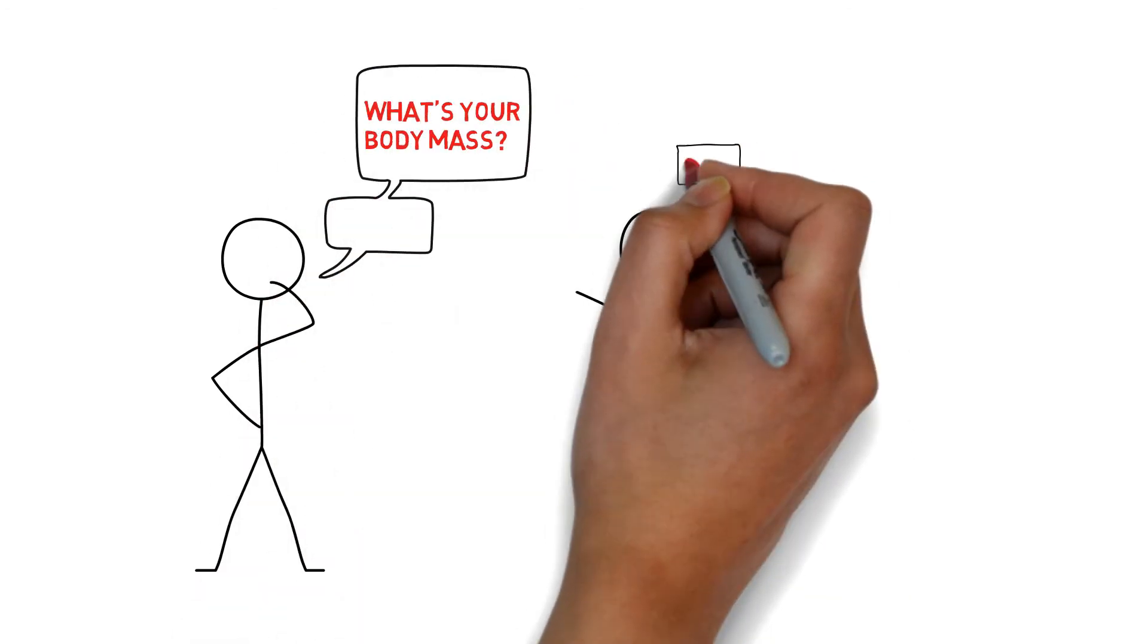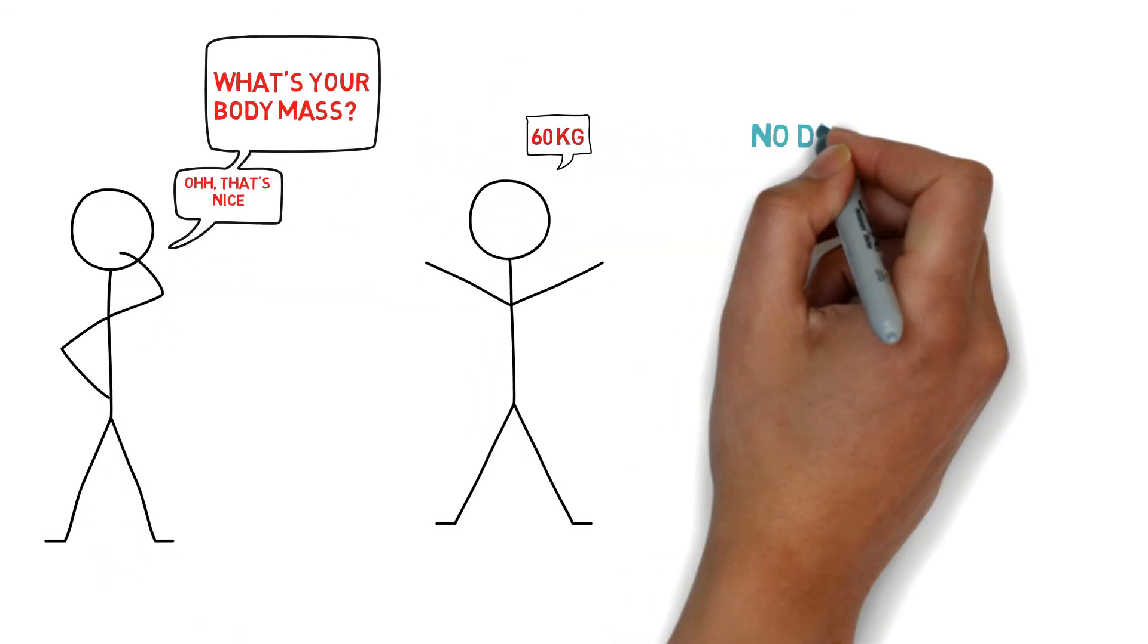When asked about your mass, all you answer is just a number and that's all. Such type of quantity is known as a scalar quantity.